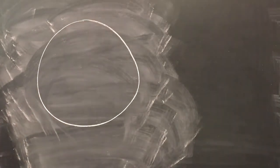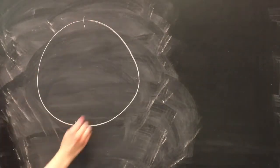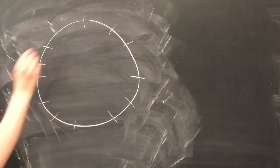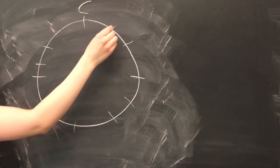The circle of fifths is a way of organizing the different key signatures that makes it easier to remember what key signature goes with which scale. You start with C, which has no sharps or flats, and then go up by perfect fifths to fill in the keys on the slots of the circle.